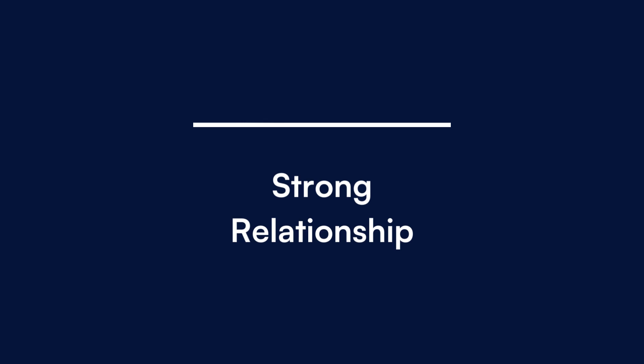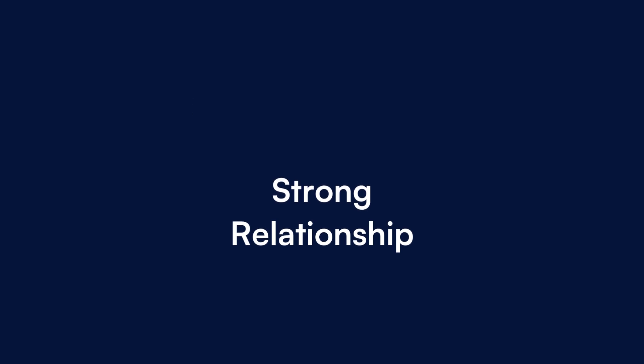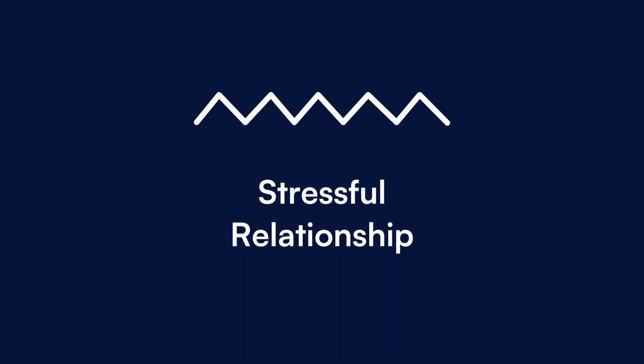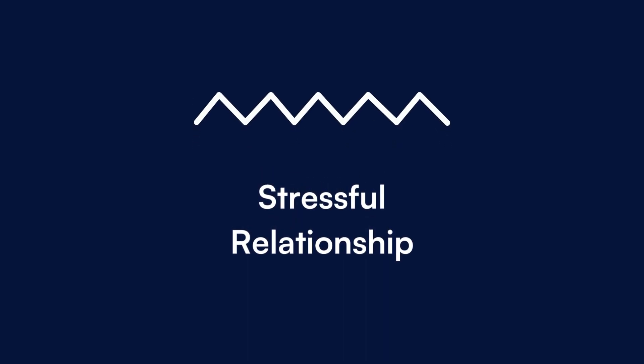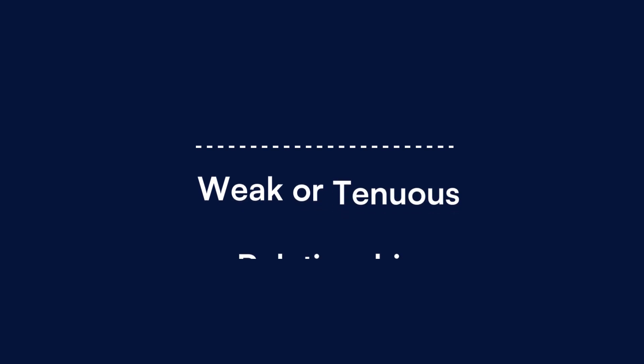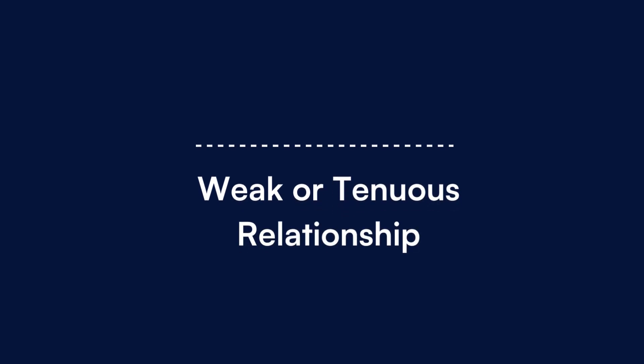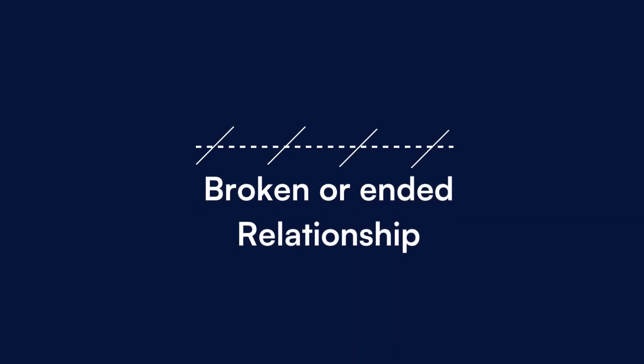Solid line: a strong relationship. Zigzag line: a stressful relationship. Broken line: weak or tenuous relationship. A broken line with slashes: broken or ended relationships.